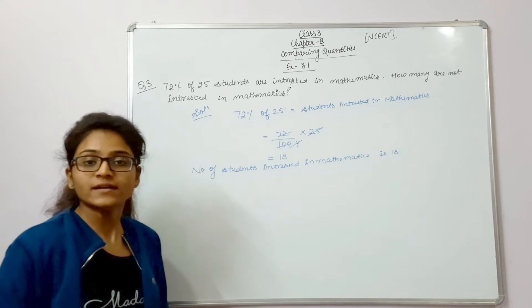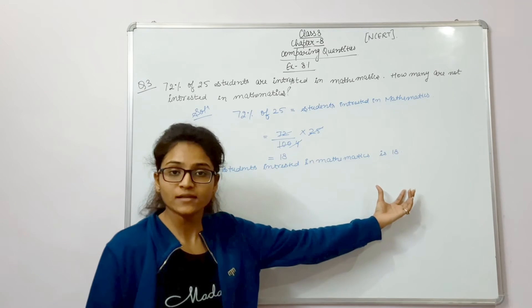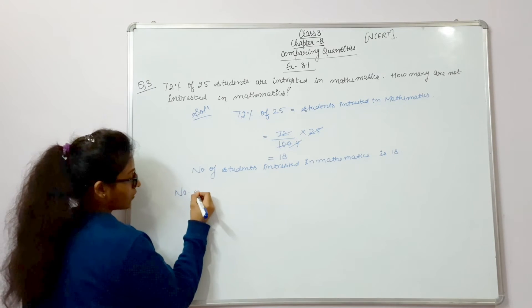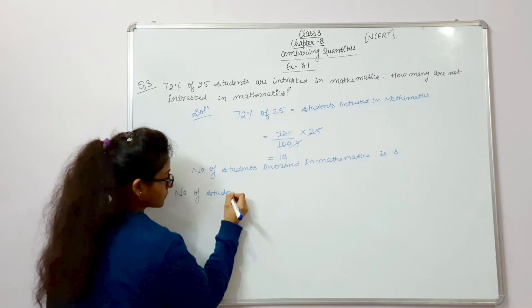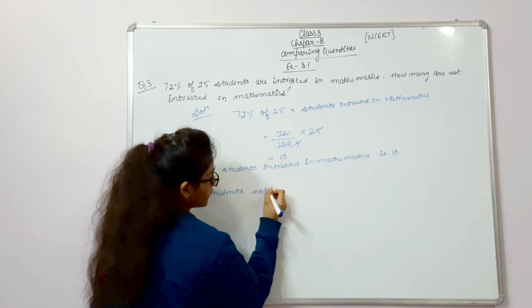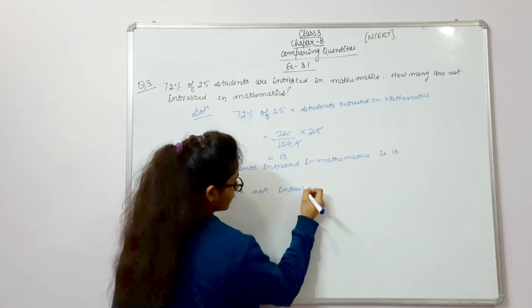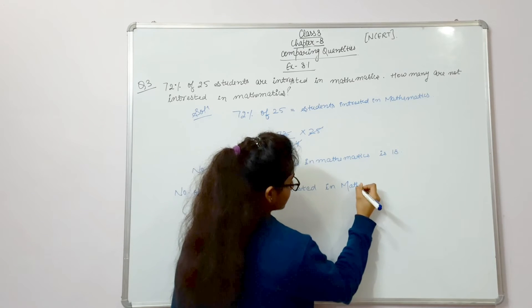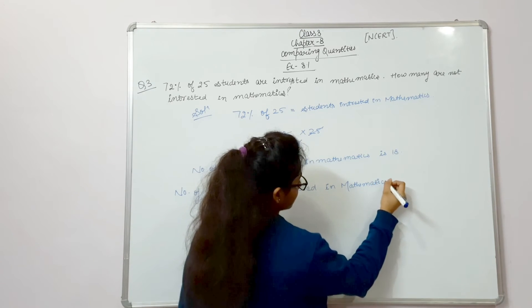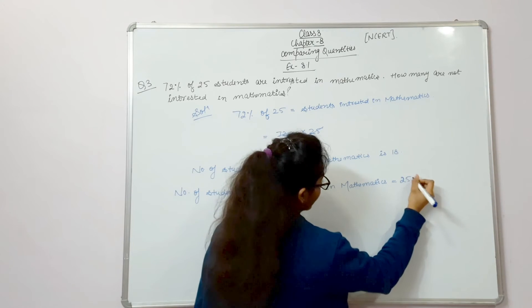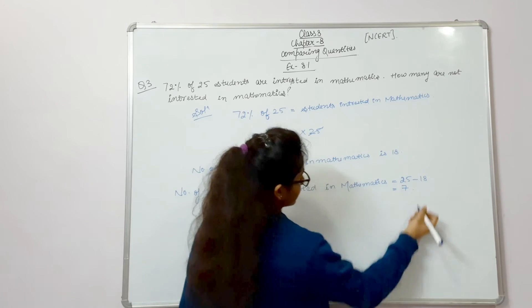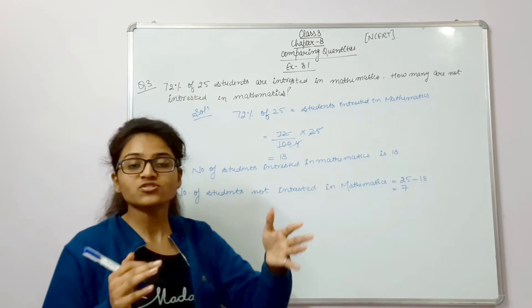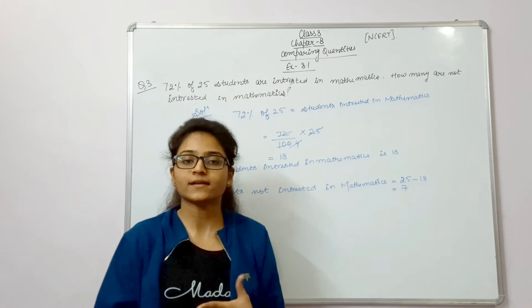So, how many children are not interested? If 18 are interested in total, then the not interested are: number of students not interested in mathematics is 25 minus 18. That is 7. So that means 7 students are not interested in mathematics, and 18 students are interested in mathematics.